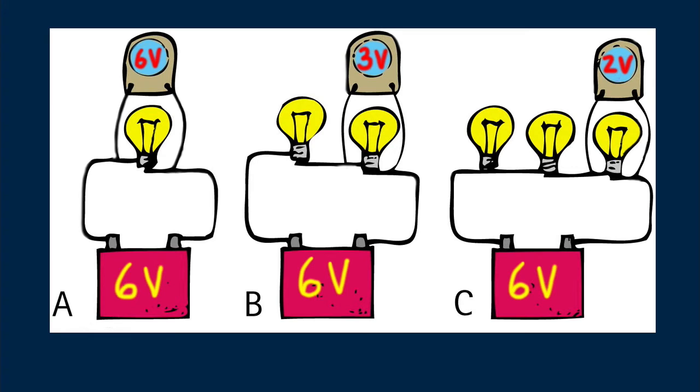And while we're on circuits, which circuit A, B, or C draws the most current from the battery? Can you see it's circuit A because it has the least resistance? And which circuit draws the least current from the battery? Correct if you said circuit C because it has three times as much resistance and, by Ohm's law, one-third the current as in circuit A.